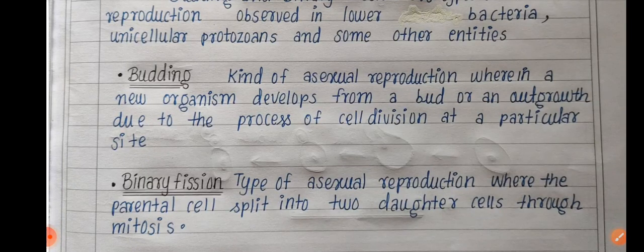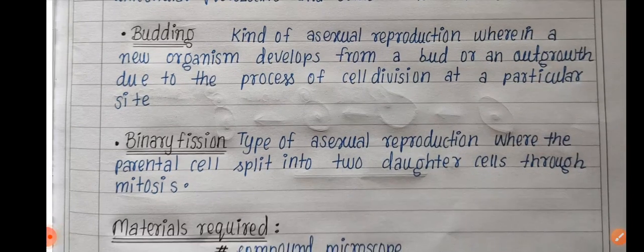Next, write definitions. In budding, the parental body has a little outgrowth that detaches from the parent and develops into a new organism. In binary fission, an organism divides its nucleus and cytoplasm to get two daughter cells.